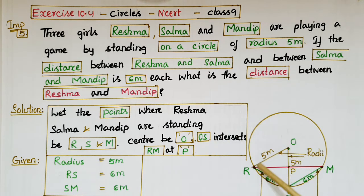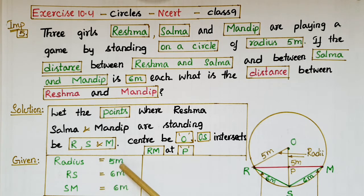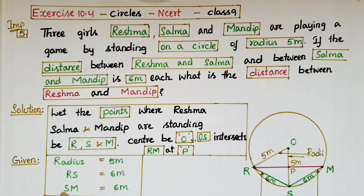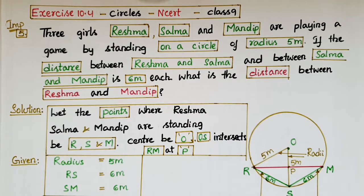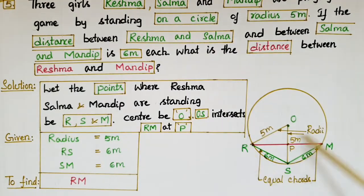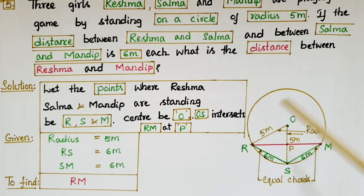The radius of the circle is given as 5 meters. The distance between Reshma and Salma is 6 meters and between Salma and Mandip is 6 meters. So RS is equal to 6 meters and SM is equal to 6 meters. We have to find the distance RM.